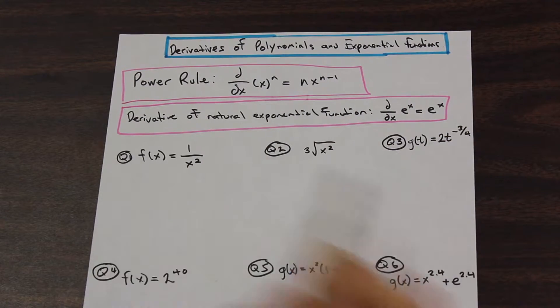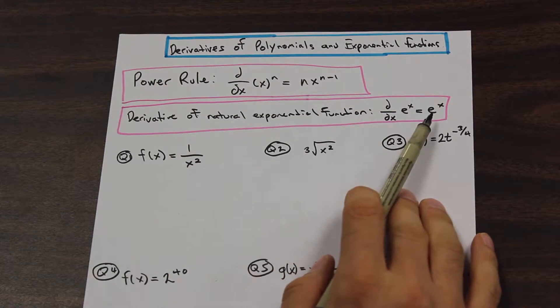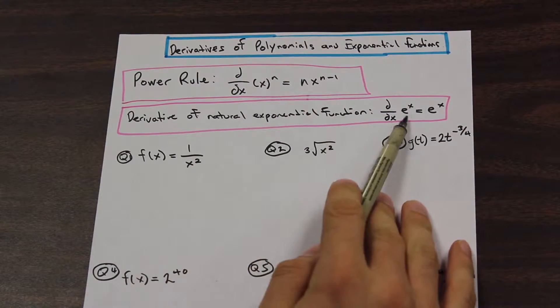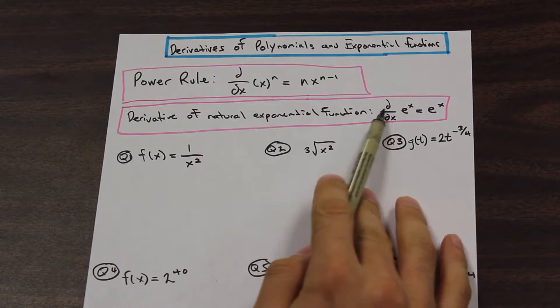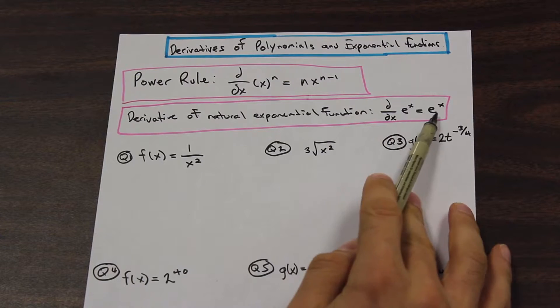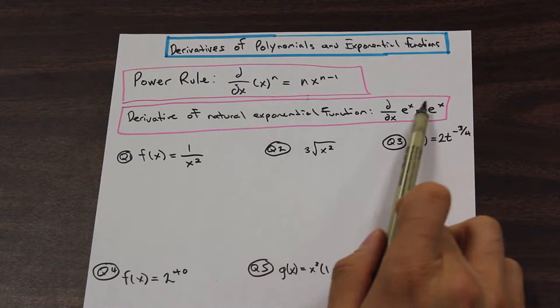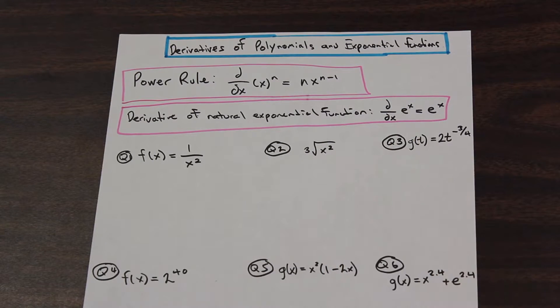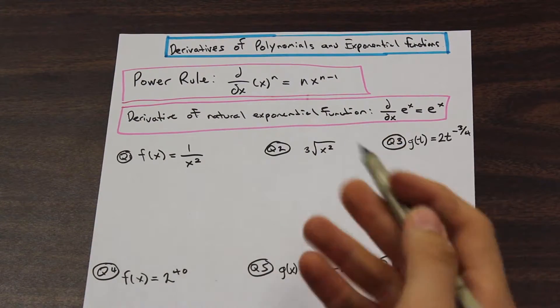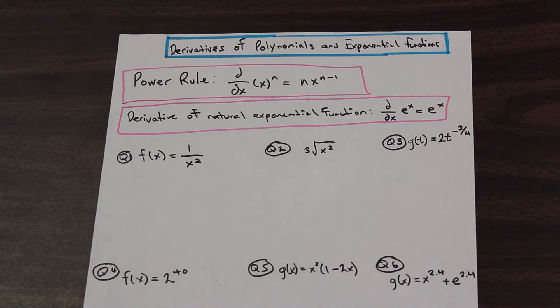And another one that you just need to memorize forever is that the derivative of the natural exponential function e. So if we have d by dx, if we're taking the derivative of this function here with respect to x, it's exactly the same thing. It doesn't change. So the derivative e to the x is e to the x. Keep that in mind. So with that being said, let's apply the power rule to a few questions here and we'll just do them nice and quick so you can get an idea of how this kind of works.